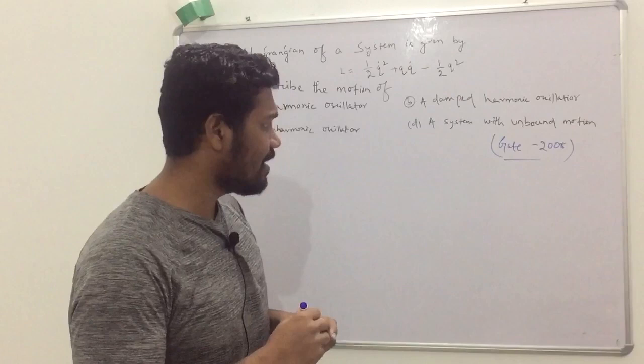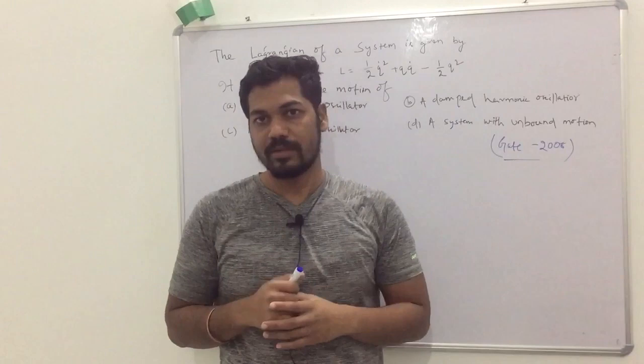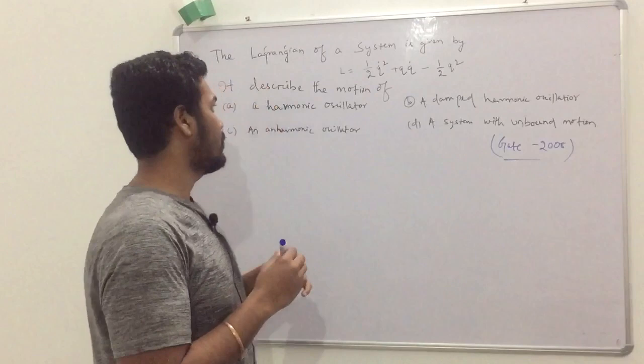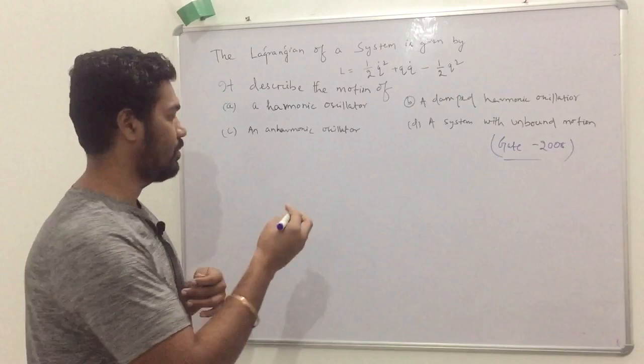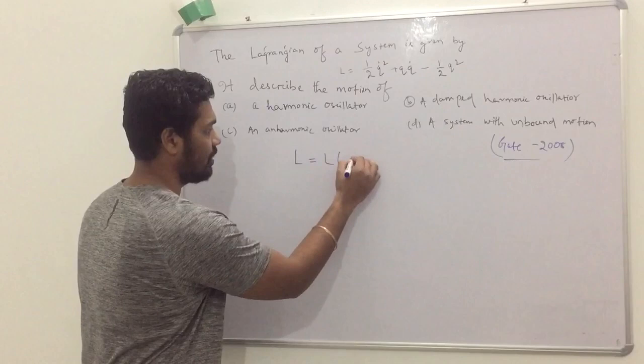To approach these types of problems, you have to find the equation of motion using the given Lagrangian. I would like to remind you of the simple concepts of Lagrangian. This Lagrangian is a function of Q, Q dot, and T.